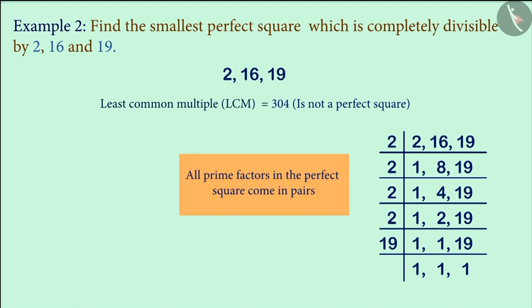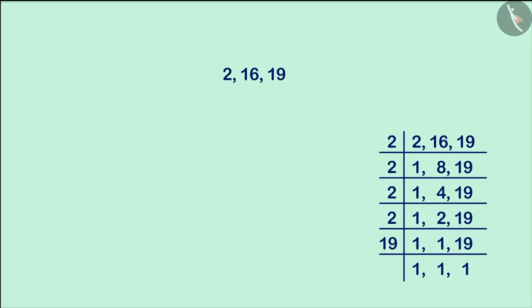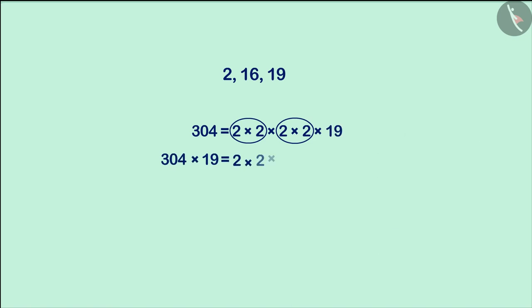We know that all prime factors in the perfect square come in pairs. In prime factorization of the number 304, only number 19 is not in a pair. If we multiply both sides by 19, we get the number 5776 on the left-hand side which is a perfect square.